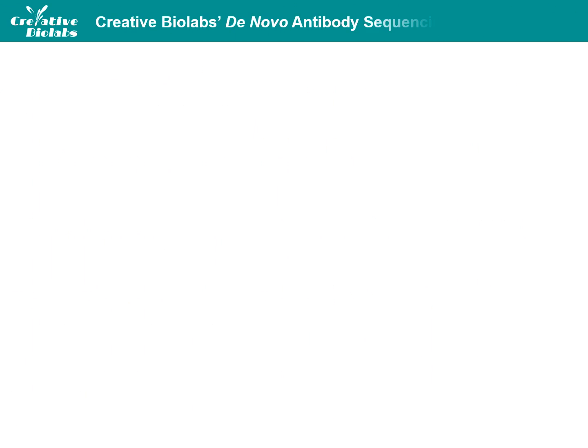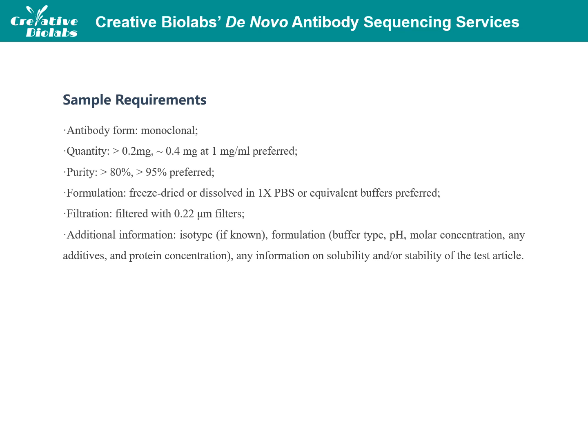To achieve the highest coverage and accuracy, we recommend the following tips to prepare sequencing samples. First, please ensure your antibody is in monoclonal form. The quantity and purity are respectively requested to be greater than 0.2 mg and greater than 80%. For formulation, freeze-dried or dissolved in PBS or equivalent buffers are preferred. Filtration is required — please filter your samples with 0.22 micron filters. Please also provide additional information about your antibody samples, such as antibody isotype, details of unusual formulation, and any information on solubility and stability of the test article.